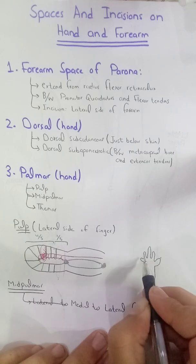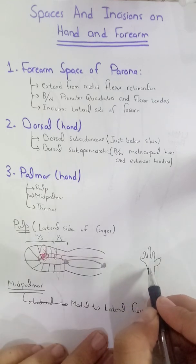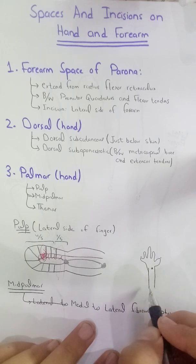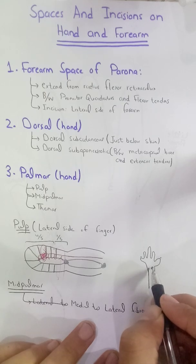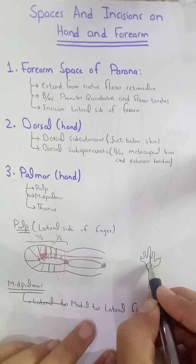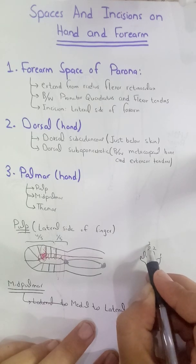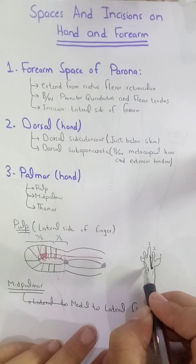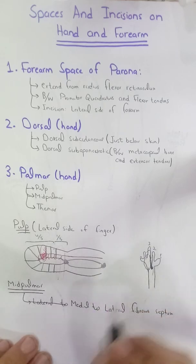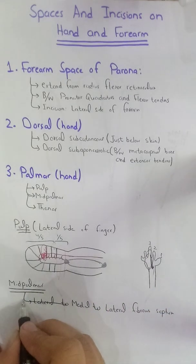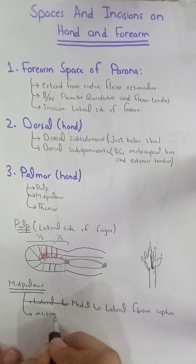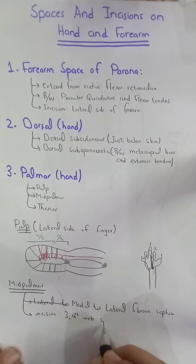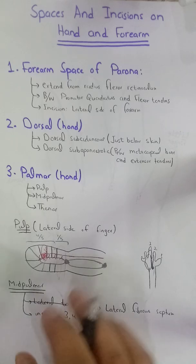The lateral fibrous septum extends from the lateral side of palmaris longus — the muscle coming from the forearm — to the third finger. The mid palmar space is the entire space medial to this lateral fibrous septum. The incision for the mid palmar space will be in the third or fourth web space, as we will see on a diagram shortly.